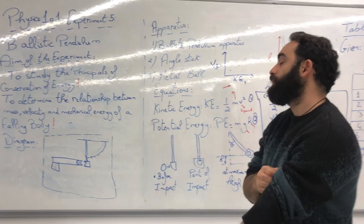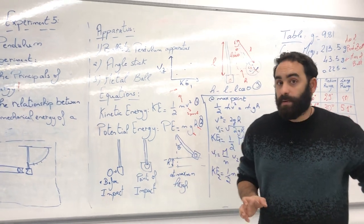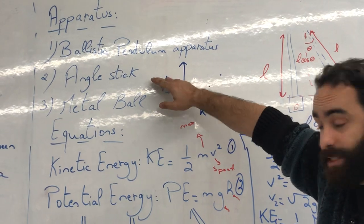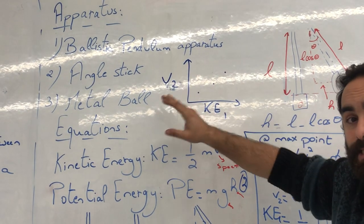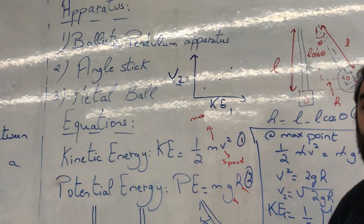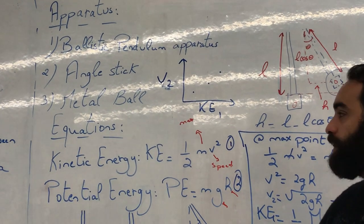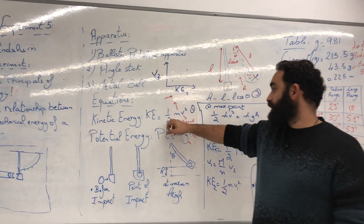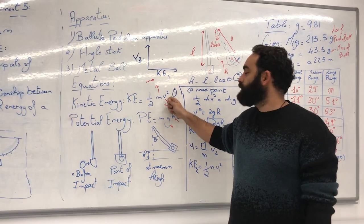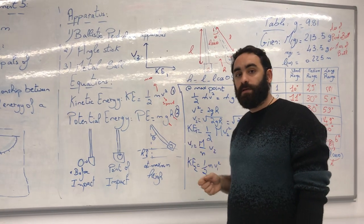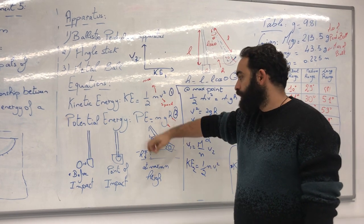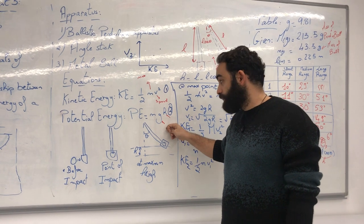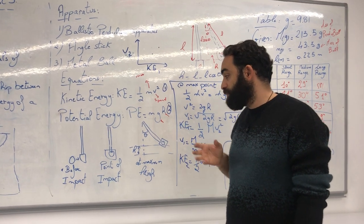The apparatus we're going to be using are: the ballistic pendulum apparatus, the angled stick, and the metal ball — just these three. For the theory, as we know, kinetic energy is half mv², where m is the mass and v is the velocity. And the potential energy is PE = mgh. These are the two energies we will be dealing with.